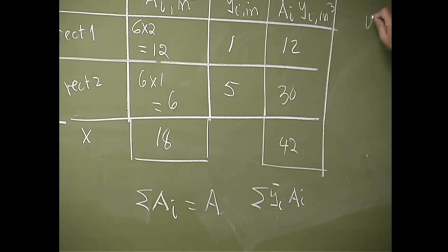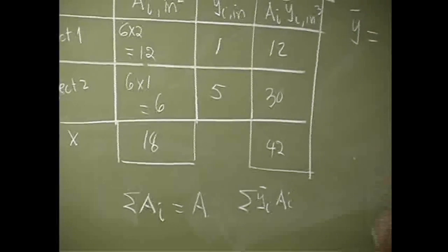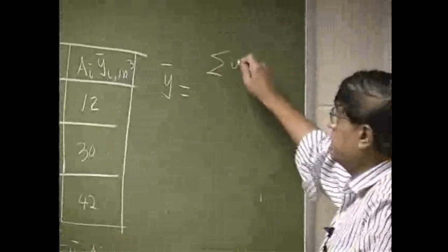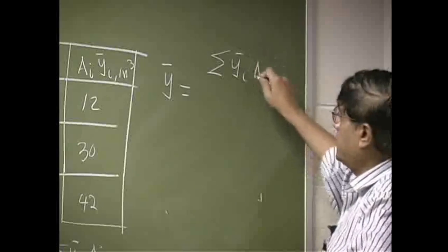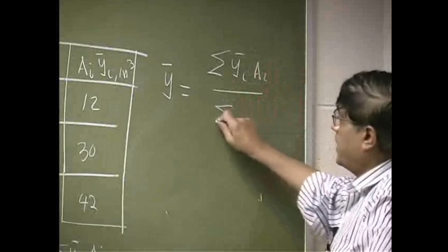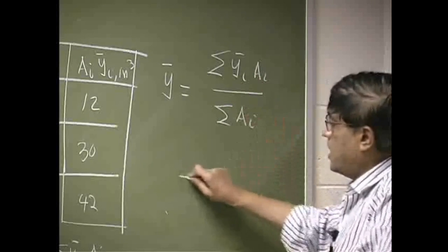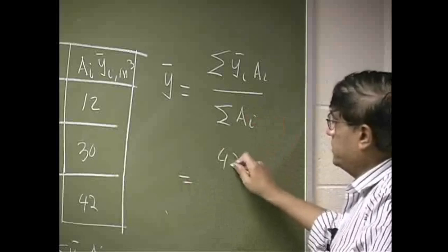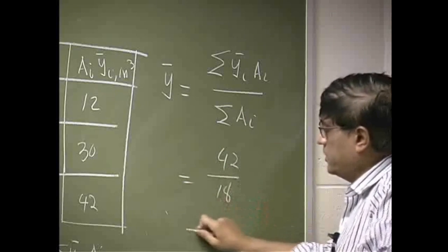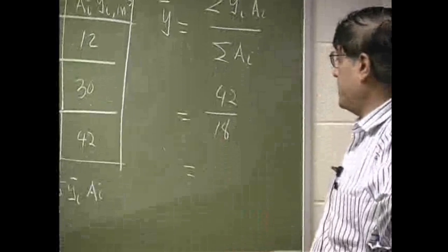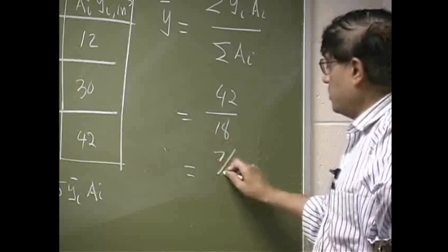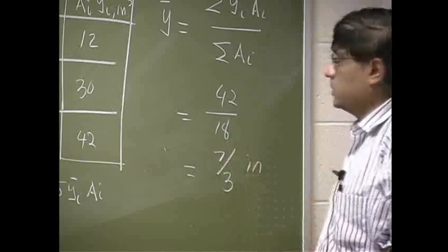Which means here, y-coordinate is going to be summation of y_i bar times A_i divided by summation of A_i. That's 42 over 18. And that becomes 7 over 3. And that's going to be in inch.